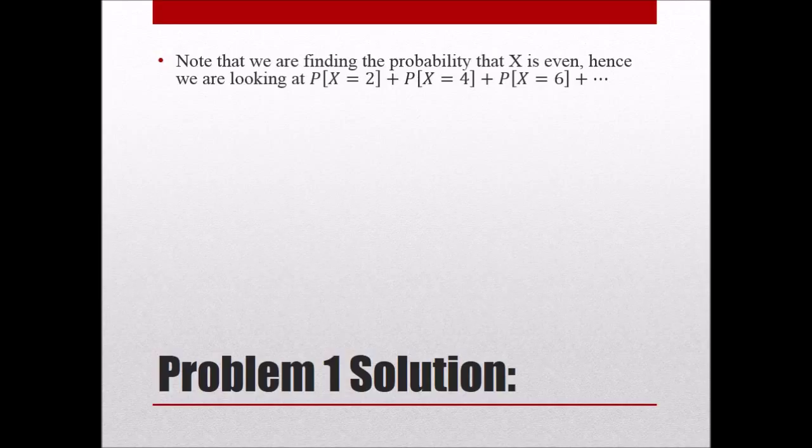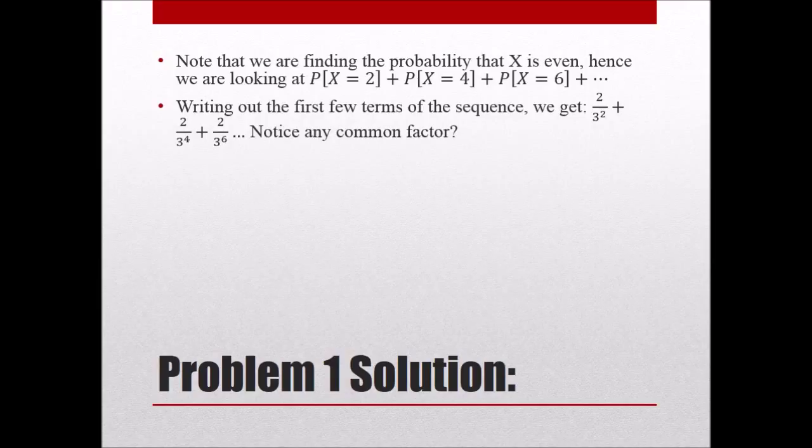If we were to write out the first few terms of our sequence, we would get something that looks like this. We have 2 over 3 squared, and then 2 over 3 to the fourth, and then 2 over 3 to the sixth. So our question then is, do we notice any type of common factor or something that we can pull out of this sequence?